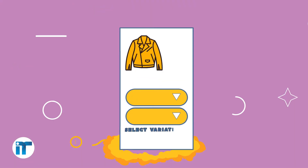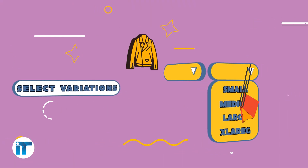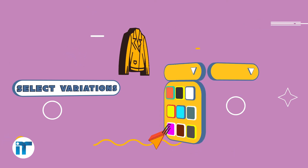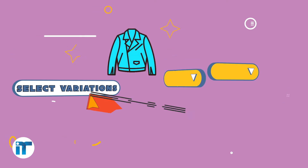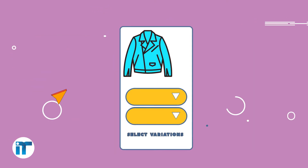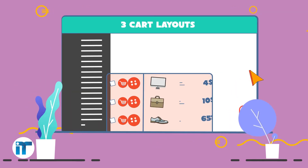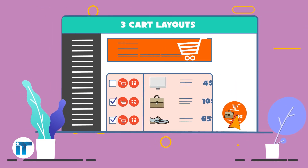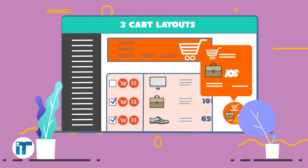Select variations: the user no longer has to go to the product page to select a variable product. Three Card Layouts: displaying cards in three different types — header/footer, floating, and sidebar.